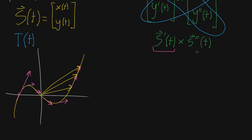And now, how would you think about the second derivative vector here? s double prime of t. Well, the way to do that, I like to think of all of the tangent vectors then just kind of living in their own space, right?